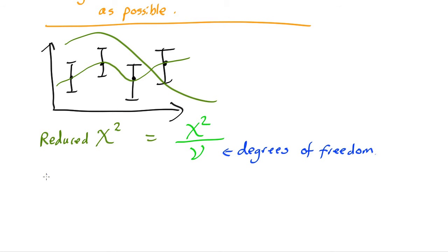What are degrees of freedom? The number of degrees of freedom is equal to the number of observations minus the number of parameters in your fit.